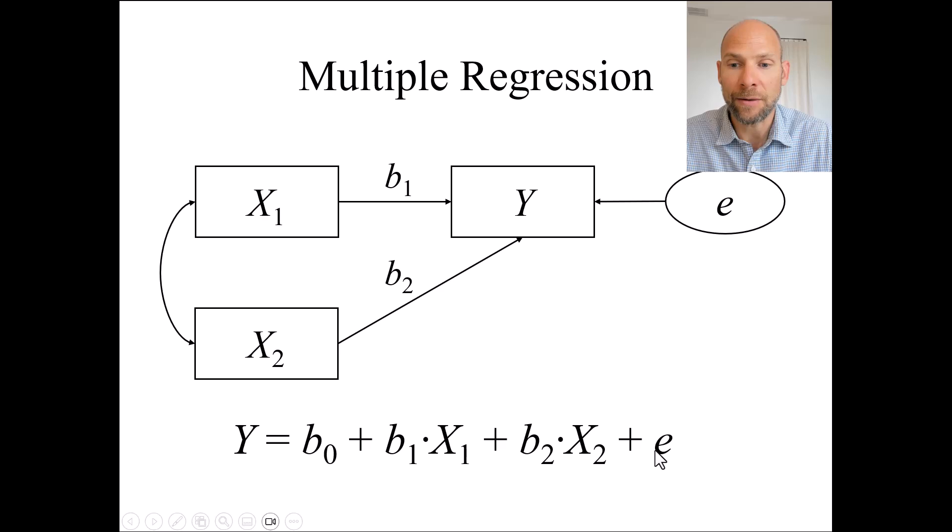Furthermore, there is a residual or error term at the end e. So e is the error in the prediction of y from x1 and x2 and that characterizes other causes of y or other determinants of y that are not included in x1 and x2, including random measurement error that is also present in y as well as potential nonlinear effects between those predictors and y or interactive effects between those predictors that are also in this case not represented in this model.